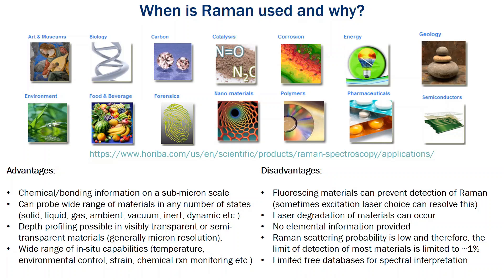We can probe a wide range of materials in a number of states including solids, liquids, and gases. Generally we're doing this under ambient conditions, however we can also scan under a vacuum. As mentioned previously, we can do this in an aqueous environment, and we can also study dynamic processes. We can depth profile because these systems are coupled to a confocal microscope — so as long as the material is transparent or semi-transparent within the visible spectrum, we can probe through the material. There is quite a freedom to the experimental design for your setup, and some of the in-situ capabilities are listed here.